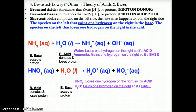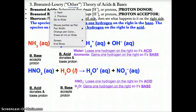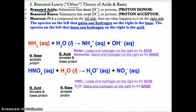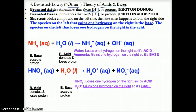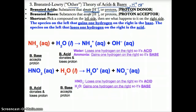Now let's talk about the Bronsted-Lowry theory of acids and bases. Bronsted acids, by definition, are substances that tend to donate or lose H+ ions or protons. Bronsted acids are known as H+ or proton donors because they already have H+ and can donate it.